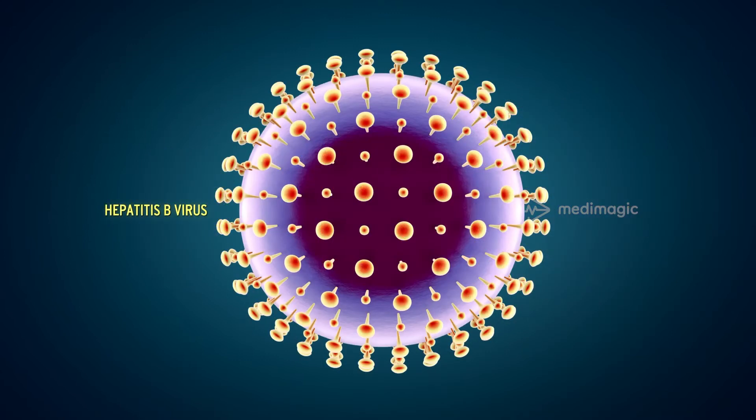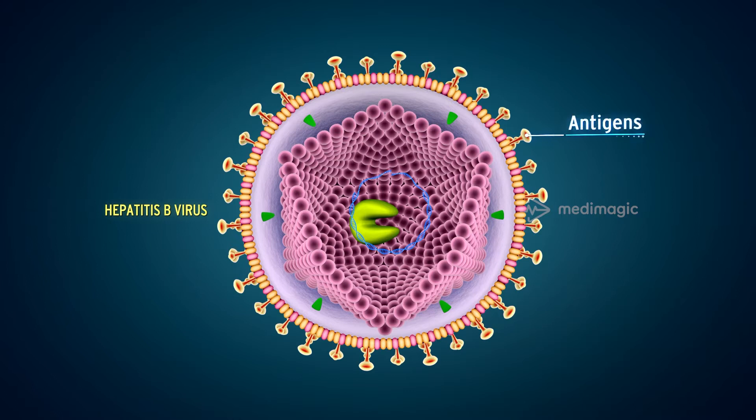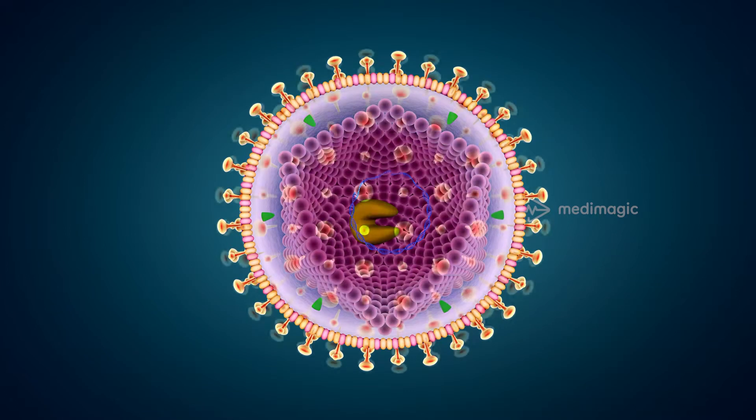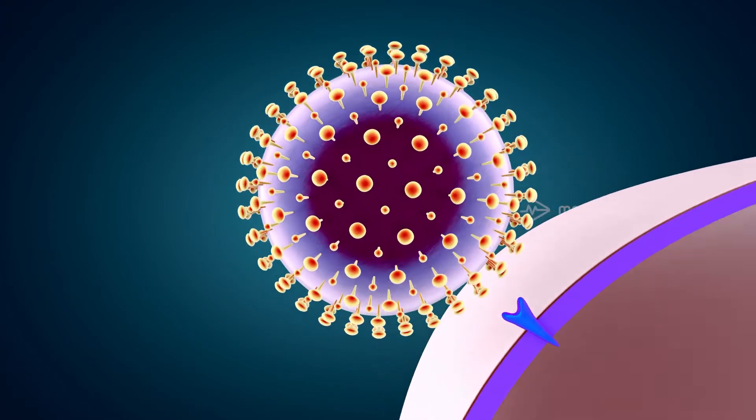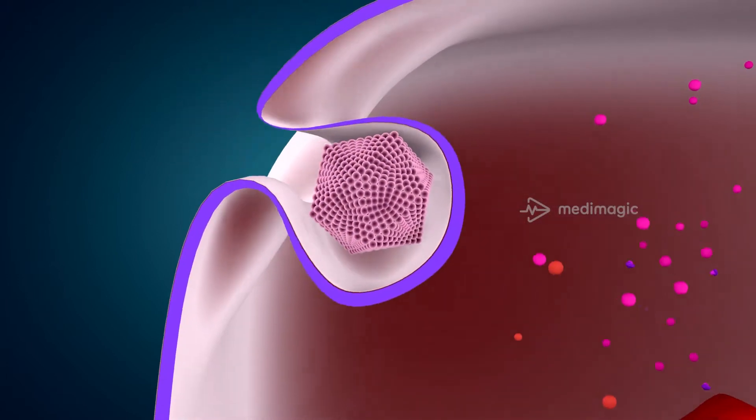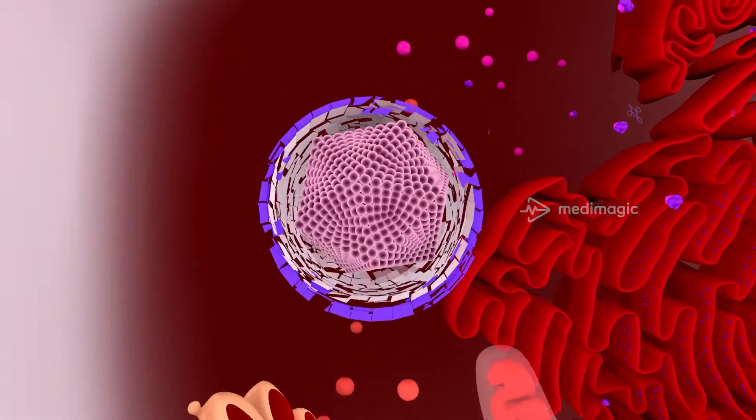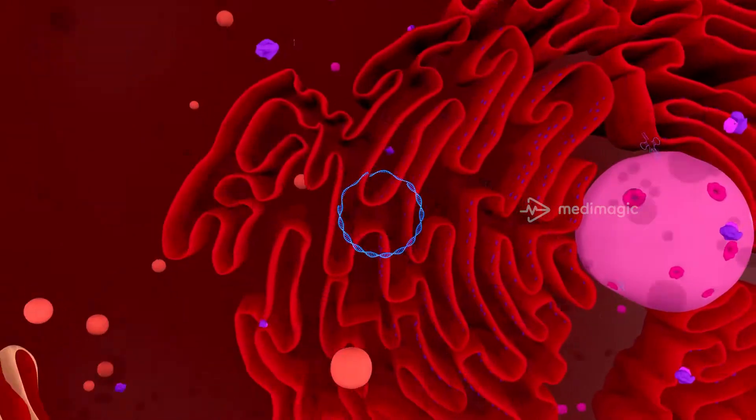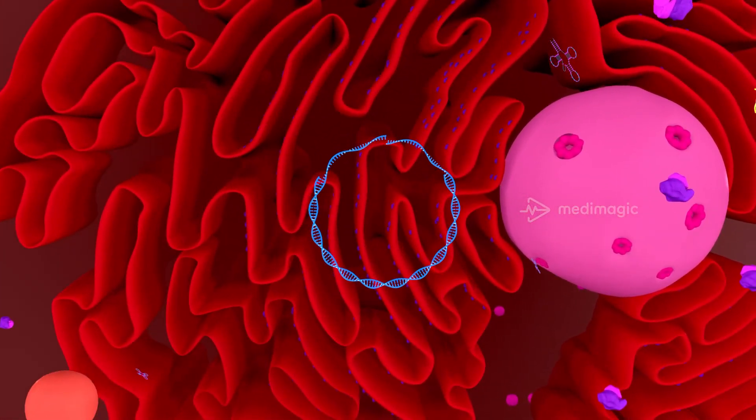The HBV binds with the receptor of hepatocytes by its antigen. This causes endocytosis of the HBV which now enters the cytoplasm. In the cytoplasm, the cell membrane and nucleocapsid slowly disintegrate, leaving the partially helical viral DNA which enters the nucleus through the nuclear pore.